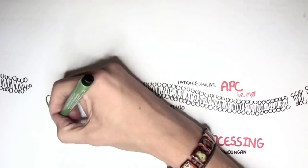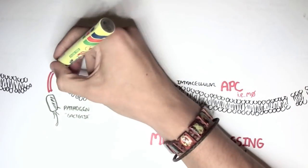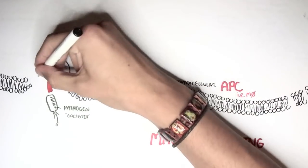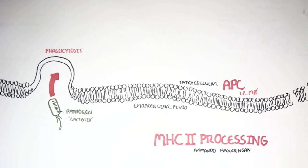Within the extracellular fluid, there can be pathogens, such as bacteria here. The macrophage, knowing that this is a pathogen, will engulf the pathogen, the bacteria, through a process called phagocytosis.